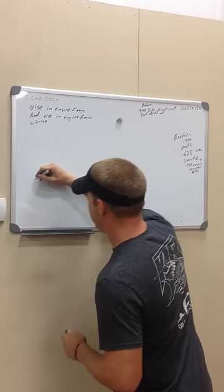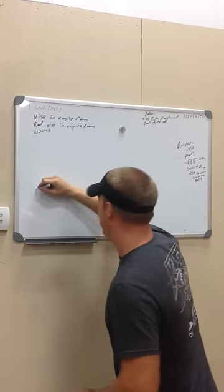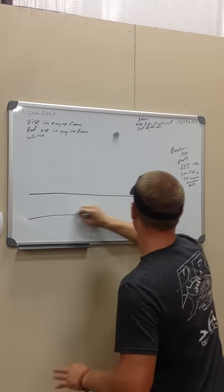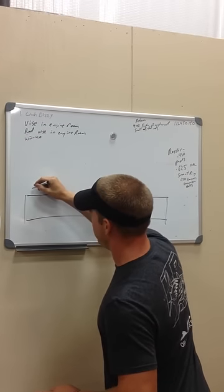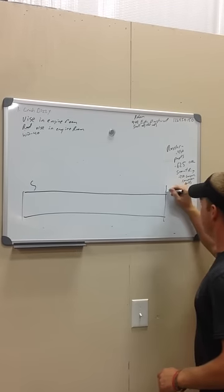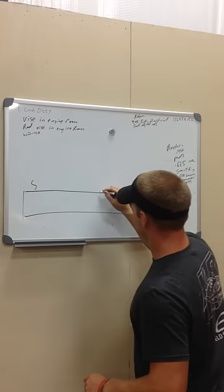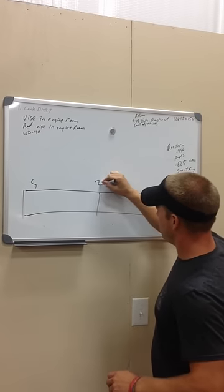All right, this, just for illustration, this is not to scale. We're going to just call this your basic drag strip. We'll call this the starting line. Here's the finish line. Here's half track. We'll call this the 330.